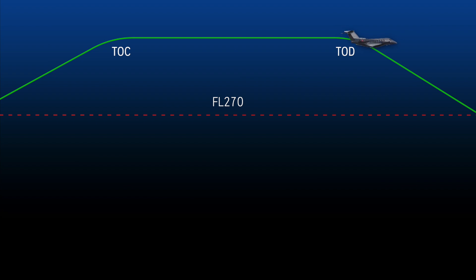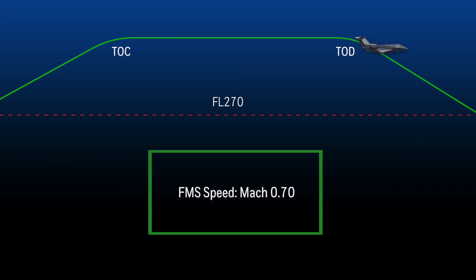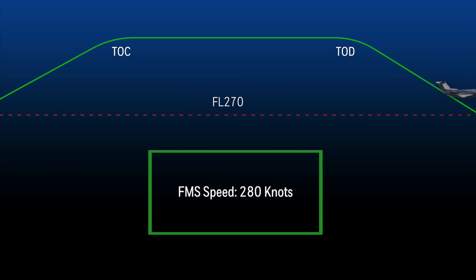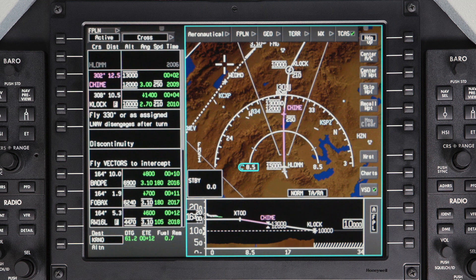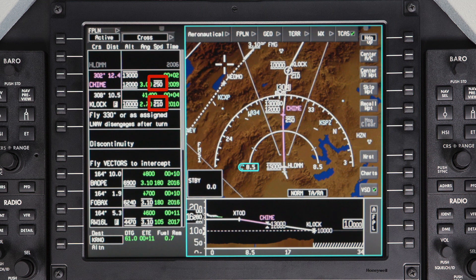The FMS target speed for the descent is Mach 0.70 until reaching the crossover altitude at flight level 270, and then transitions to 280 knots. The FMS will also comply with any speed restrictions on the arrival as long as they exist in the flight plan.